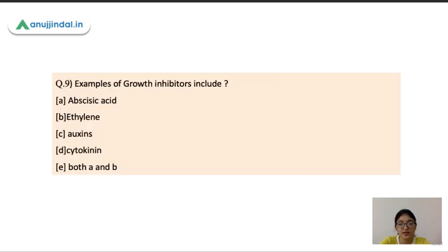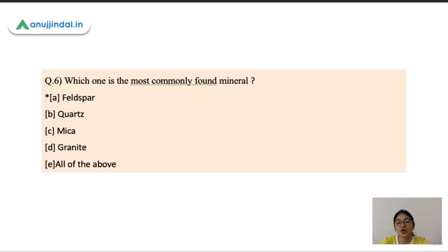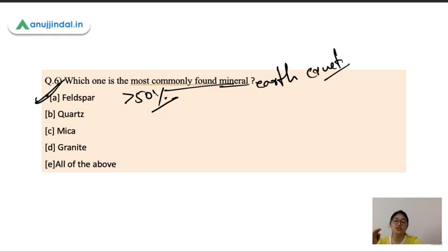Now which one is the most commonly found mineral? Most commonly found mineral is the feldspar. So feldspar accounts for more than 50% of the mineral that is found on the earth crust. In the earth crust, there are different minerals like feldspar, quartz, mica, granite. But the most found is feldspar, more than 50% of the mineral. And in feldspar, there are more aluminum and silica.